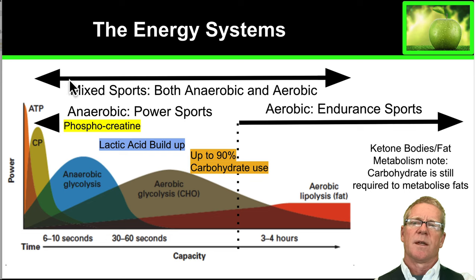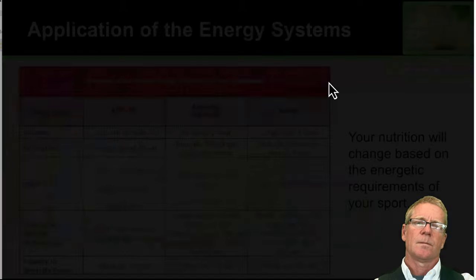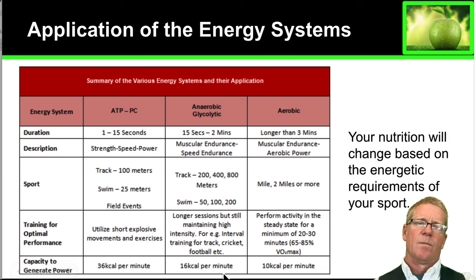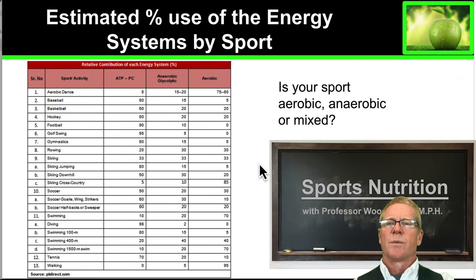Mixed sports require both the anaerobic phosphagen system and the aerobic glucose and fat burning systems. Looking at the capacity to produce power: the phosphagen system can produce a lot of power but only for an extremely short period of time. The anaerobic system generates a moderate amount of power but only for two to three minutes at most. The aerobic system produces a lower level of power but can sustain that for many many hours.